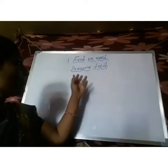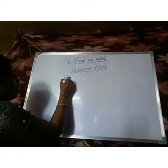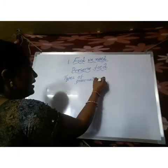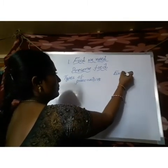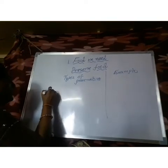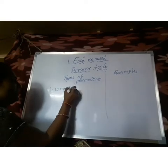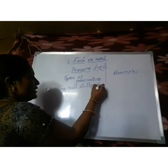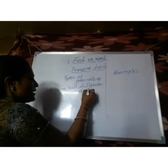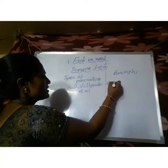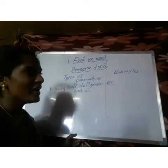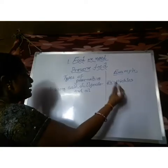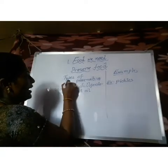In our textbook, they have given types of preservatives with examples. The first type uses salt, chili powder, and oil. Already in summer season, your grandmothers will prepare this — pickles! Pickles are preserved using salt, chili powder, and oil. The second type involves adding only salt — the example is dry fish.